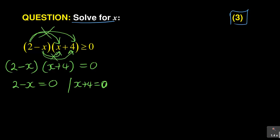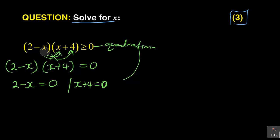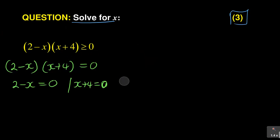Why avoid expanding? Because after expanding, you would use the quadratic formula, which will still take you back to the same answer. So you are just wasting time by expanding and going all the way to the quadratic formula. They have already factorized it for you, so just take it from there. Expanding makes it more difficult and opens you up to more errors.